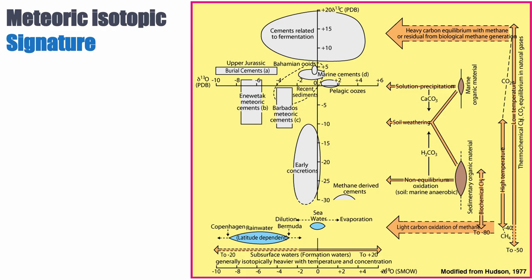So what happens in terms of isotopes for meteoric cements? We've already talked about the fact that meteoric water will be depleted in O18, so you won't be surprised that meteoric cements typically fall at relatively low delta O18, below marine values. They also tend to have light carbon isotope values, below zero, all the way to minus 10 — for instance in Barbados or Enewetak. There is a range, which is quite typical for meteoric cement, so let's review why we have this range, starting with the carbon isotope and what controls it in meteoric cement.